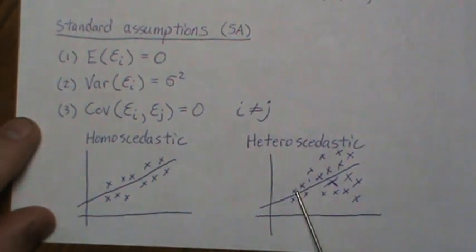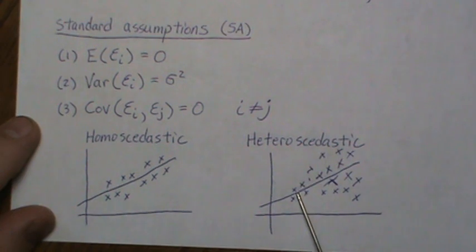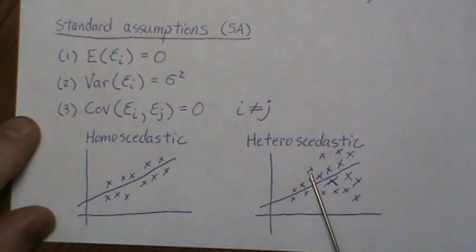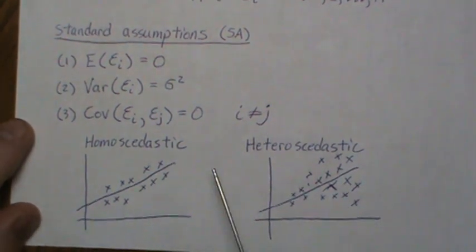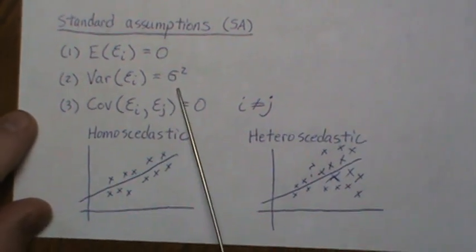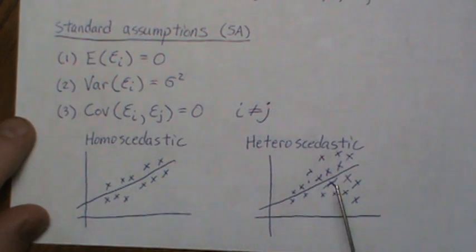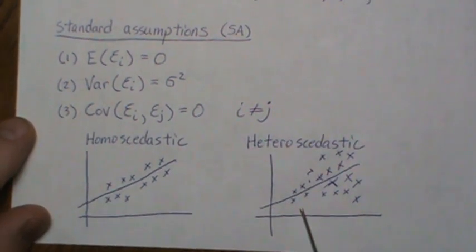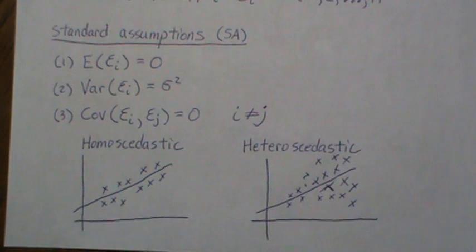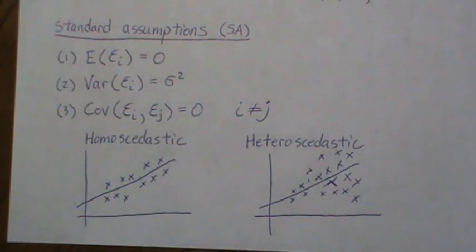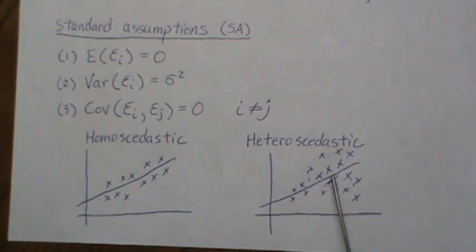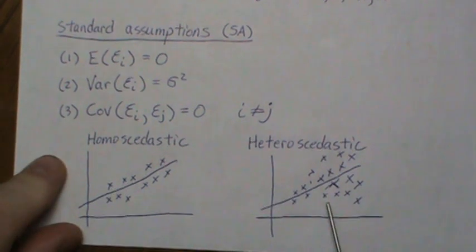This violates SA2 specifically: the variance is not constant — the error around the line is small here and then gets bigger and bigger. That's heteroscedasticity, and it violates SA2. So if the data looks like this, we can't do simple linear regression.